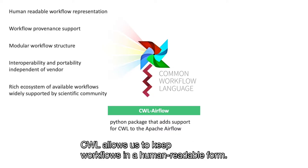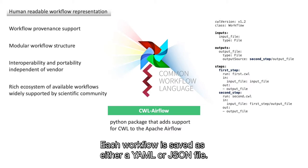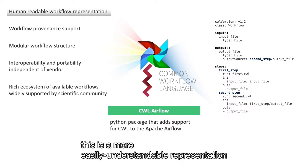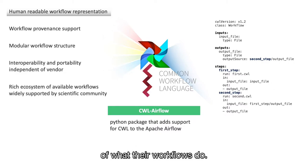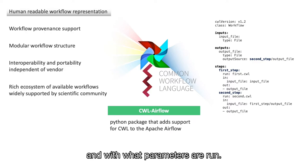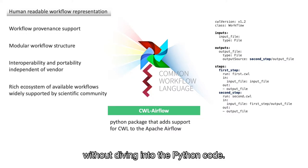CWL allows us to keep workflows in a human-readable form. Each workflow is saved as either a YAML or JSON file. For biologists who may not be very experienced with Python, this is a more easily understandable representation of what their workflows do. From the CWL representation, they can easily understand which tools and with what parameters are run. Additionally, it's much easier to make small corrections in place without diving into the Python code.